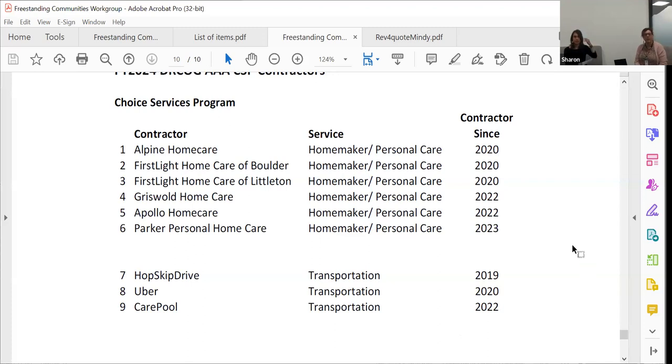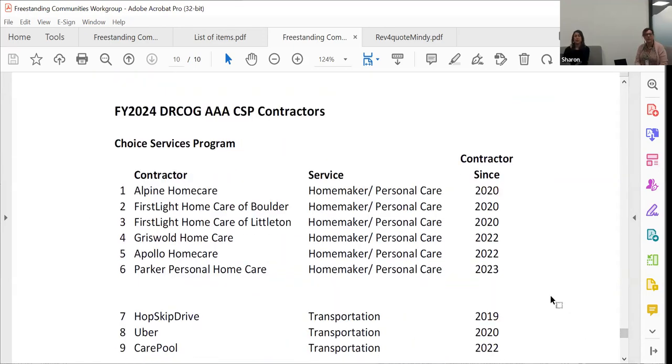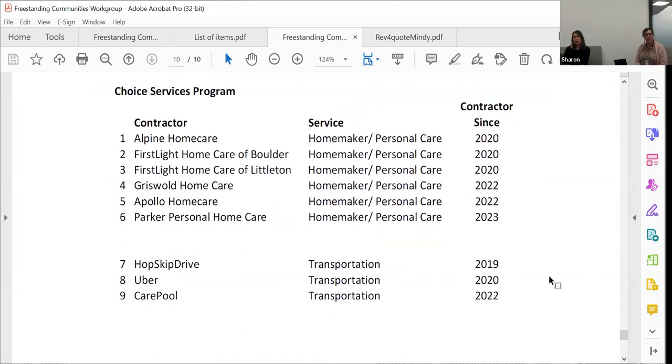And the year that we started contracting with these providers, we renew their contracts annually. We review them. Our client assessments are done in-house. So, it is an internal program as far as, you know, we are the ones who do the intake and the assessment for the clients. And then we make referrals to these fee-for-service providers for in-home and transportation services. And so, we have a budget and just based on how much we have available to issue for those vouchers, whatever is unspent every month goes back into the pool. And then we issue new vouchers to new clients.